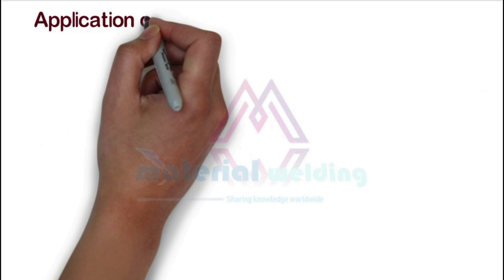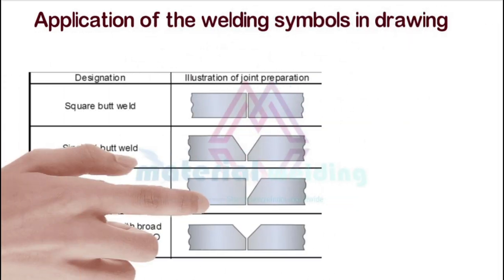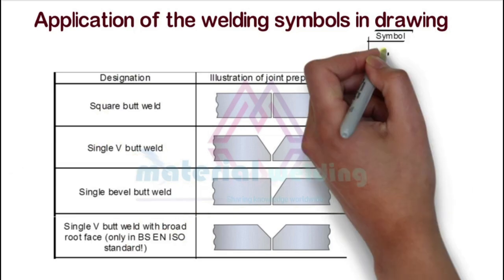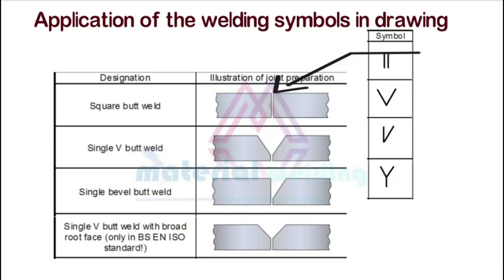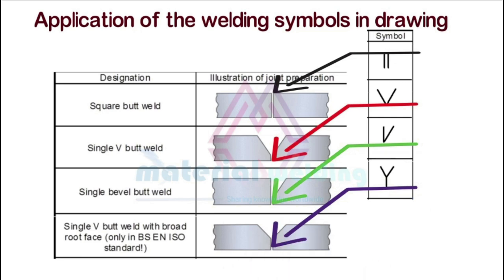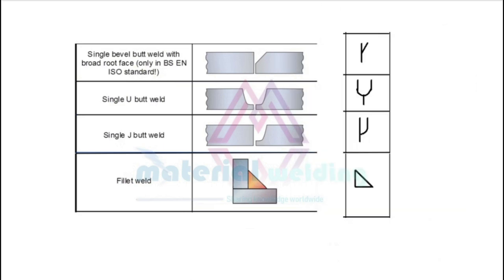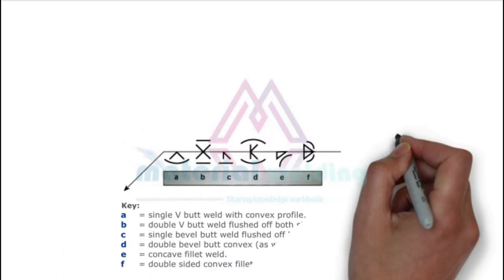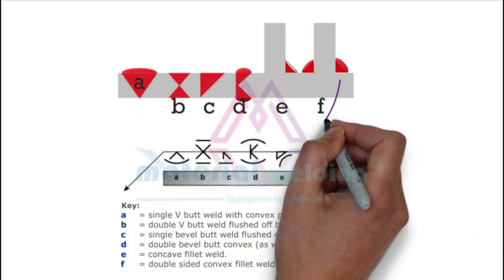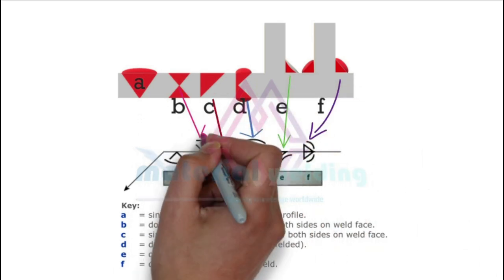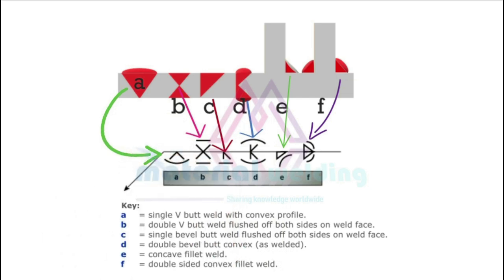We have already learned the welding symbol for fillet welds. Now let's see welding symbols for different types of groove welds. The first is the square butt weld, which is a butt weld without any groove preparation. The second is a single V butt weld and the third is a single bevel butt weld. The last one is a single V with a broad root face, also called a partial joint penetration weld. Other types include single bevel butt weld with broad root face, single U butt weld, single J butt weld, and fillet weld types. Take your time to get familiar with each type.